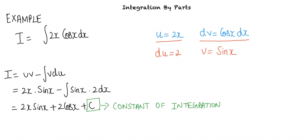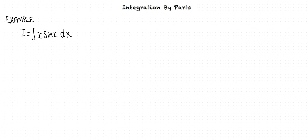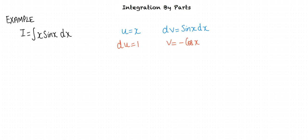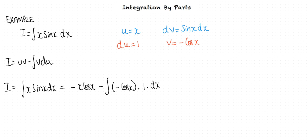Consider another example: determine the integral I equals the integral of x sin x dx. Here u equals x and dv equals sin x. The next step is to evaluate du and v. We have u equals x, and hence du equals 1. Similarly, dv equals sin x, and hence v equals negative cos x. Finally, substituting in the by-parts formula, the integral of x sin x dx equals negative x cos x minus the integral of negative cos x dx. So the answer is negative x cos x plus sin x plus C.